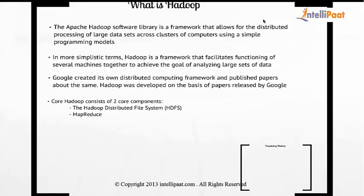There's an interesting story: when Doug Cutting completed the development of Hadoop, he wasn't really sure what name to give it. His baby had a yellow color elephant and the baby would call that elephant 'Hadoop' — and that's how the name came about. The name has no meaning; it was short, sweet, and Doug Cutting liked that. It's simply what his baby used to call his toy elephant.